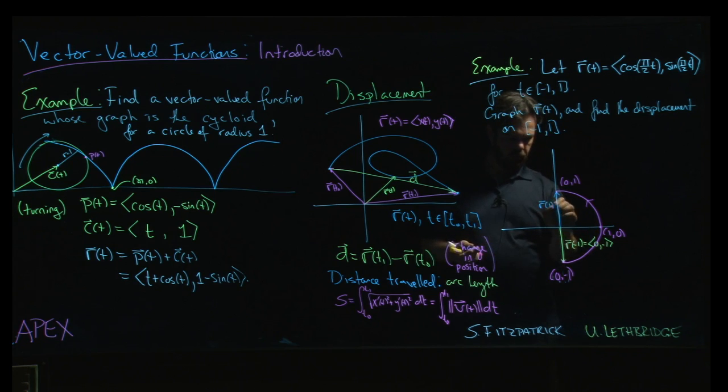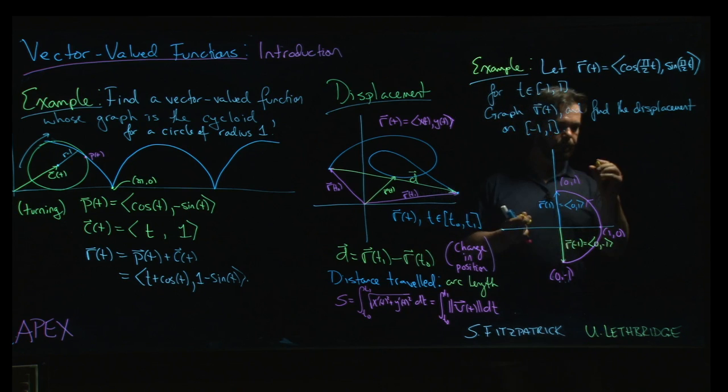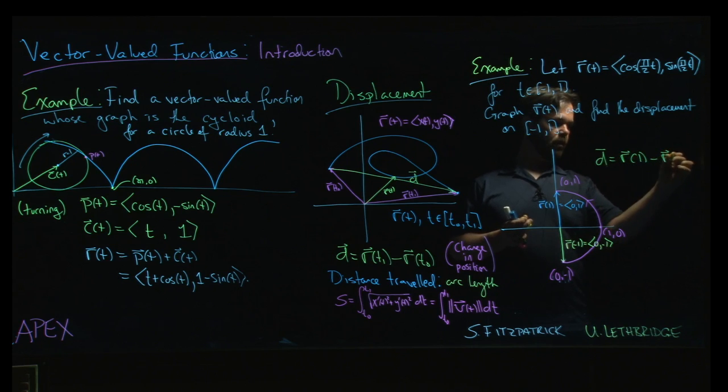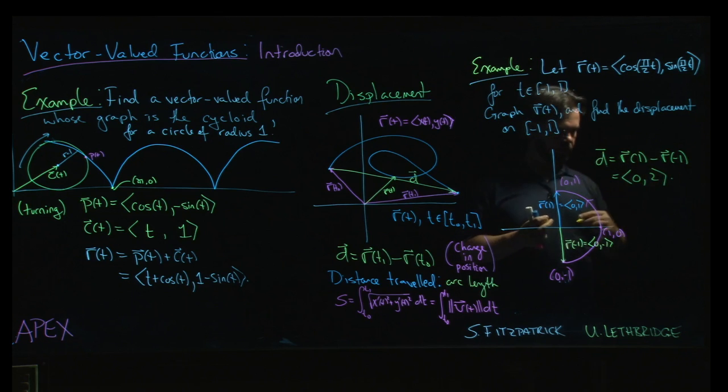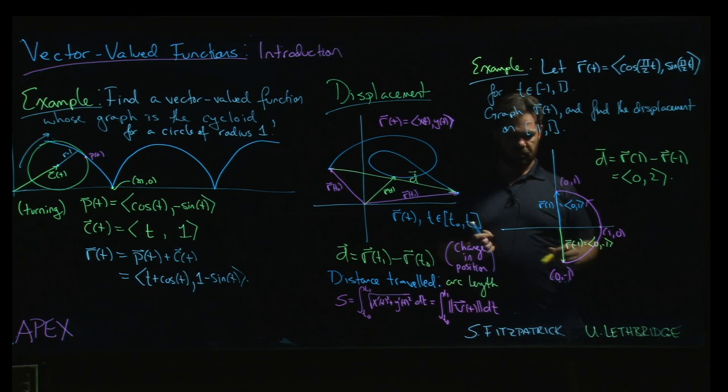r of 1, which is going to be (0, 1). And our displacement will be r of 1 subtract r of minus 1, which is going to be (0, 2). So from beginning to end, we go up two units, two units in the y direction. And even though we did go out and come back, the x coordinate from beginning to end hasn't changed.